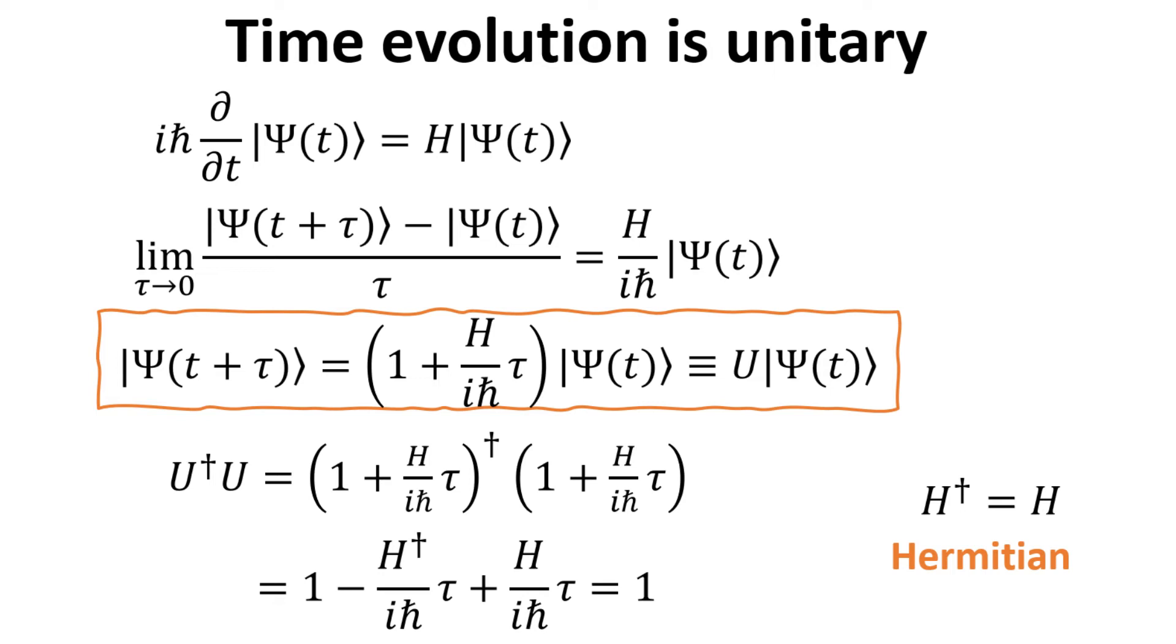We define the operator that generates this infinitesimal time evolution as U. To check if U is unitary, we take the product of U† with itself, and we can show that this is unity, provided that the Hamiltonian H is Hermitian, which it is. Thus the time evolution operator U is unitary.